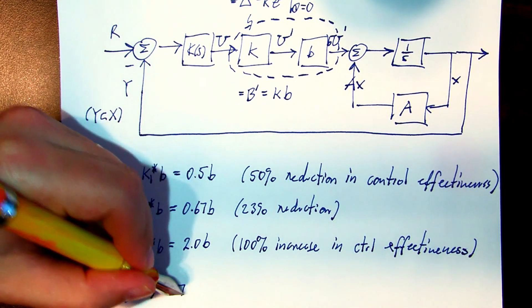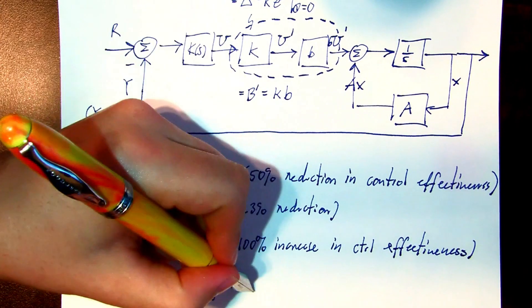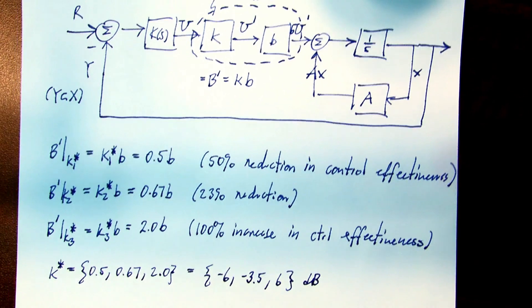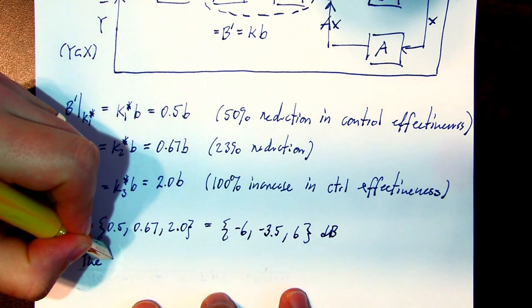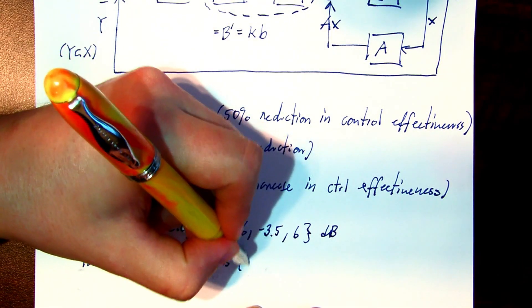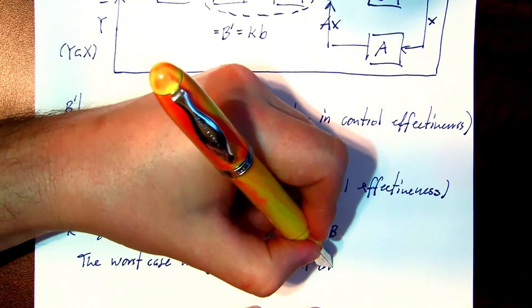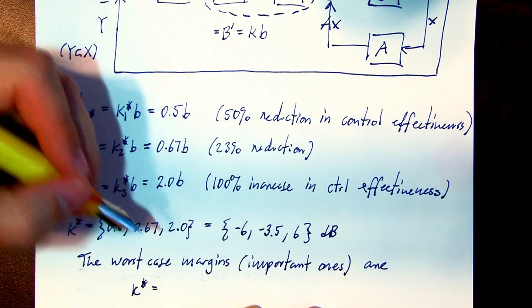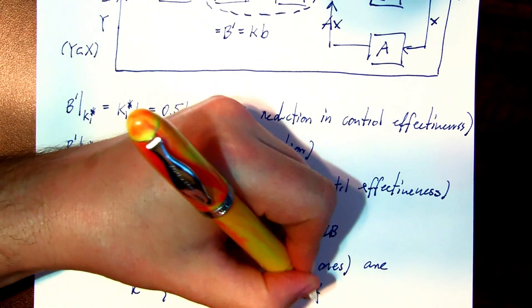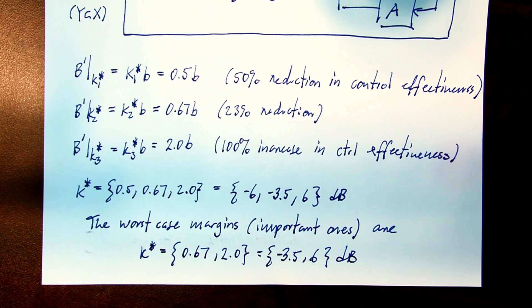Collecting them together, we have a set of margins. But only a subset of those are important for analysis. The worst case margins are those that are closest to the critical point. And in this case, it's 0.67 and 2, or minus 3.5 and 6 dB. So as a rule, the worst case margins are the maximum of the negative margins and the minimum of the positive margin.